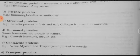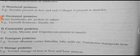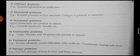Contractile proteins help in the contraction and relaxation process — examples are actin, myosin, and tropomyosin, present in the muscle. Transfer proteins help in the transport of various molecules — serum albumin carries bilirubin and fatty acids; transferrin transports iron. Storage proteins: ferritin stores iron in the liver and bone marrow.